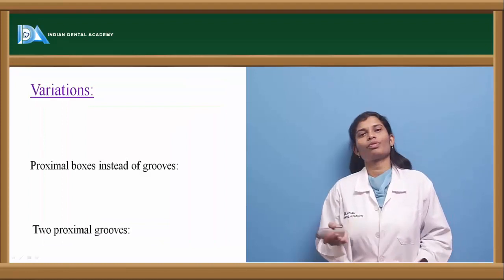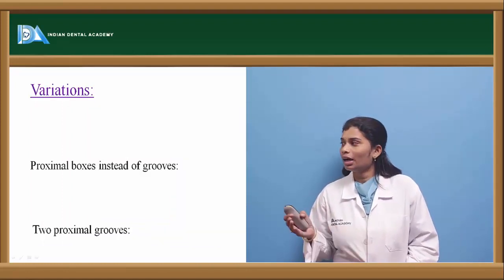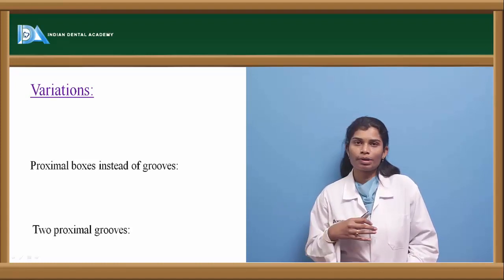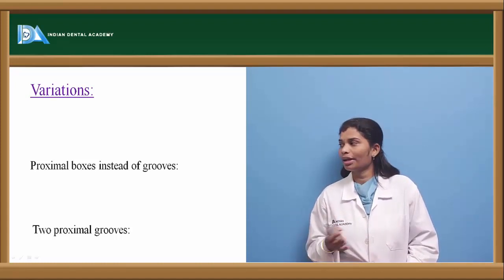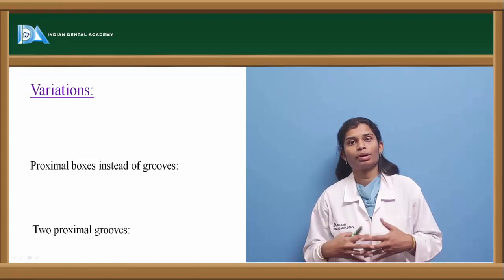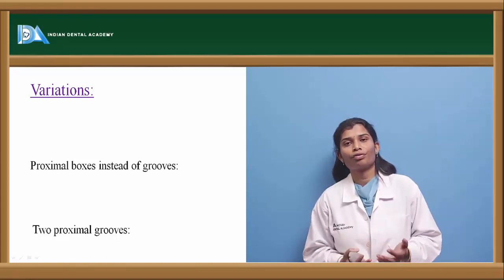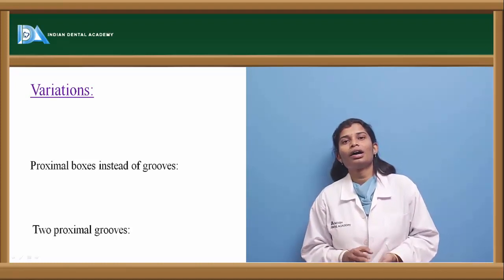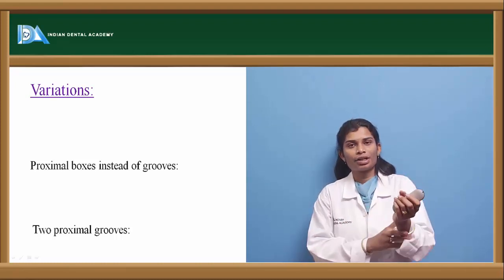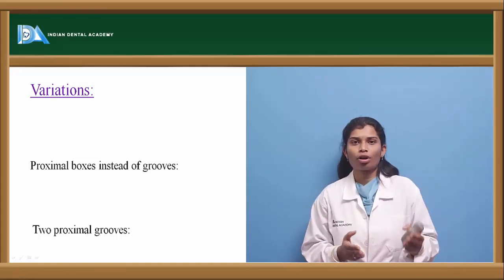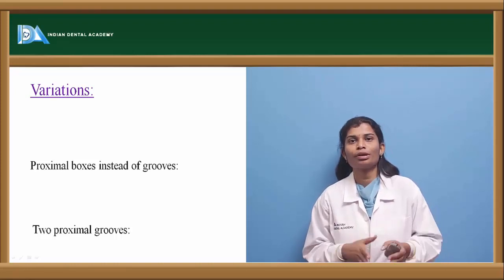Variations in three-quarter crowns: there can be two proximal grooves on both sides, or these can be extended to proximal boxes if more tooth structure is available and more retention is needed — proximal boxes can replace proximal grooves in such cases.